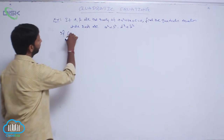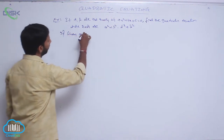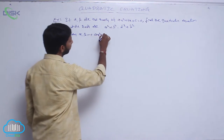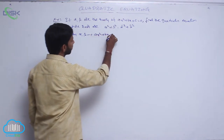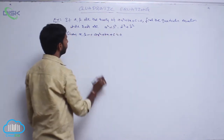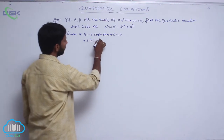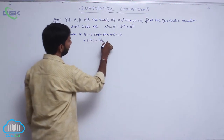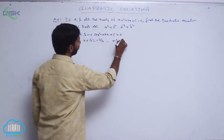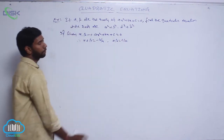Given alpha and beta are the roots of equation ax² + bx + c = 0. Therefore, alpha + beta = -b/a, and the product of roots alpha·beta = c/a.